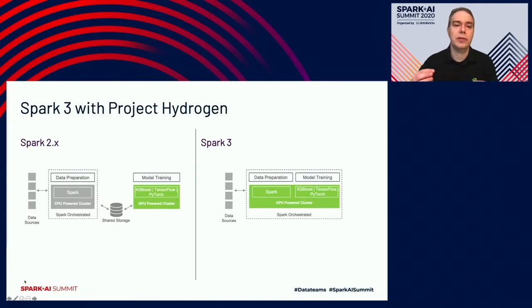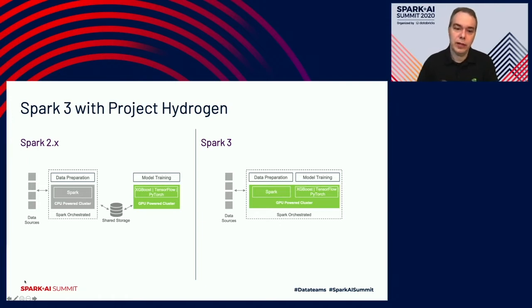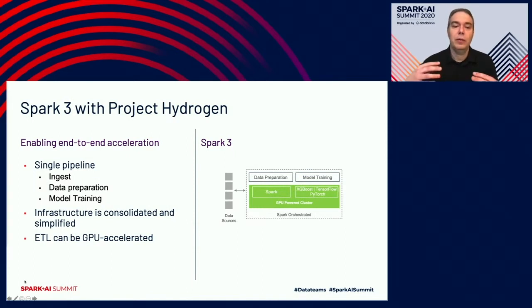With all these features put together, Project Hydrogen Initiative is coming to fruition. In Spark 2, the traditional pipeline had data preparation done on a CPU cluster orchestrated by Spark, necessarily serialized out to shared storage, and then a separate GPU cluster that loaded that serialized data back up and trained it with XGBoost, TensorFlow, or your favorite AI framework. With Spark 3, we finally have a unified architecture — a single pipeline. With stage-level scheduling, we can schedule it all as one application: ingestion, prep, model training, all orchestrated by Spark on a single platform, built through AI.